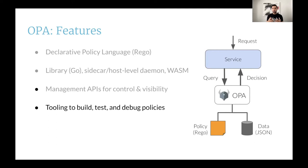Along with the core policy engine, OPA provides you with a rich set of tooling that allows you to build, test, and debug your policies. OPA provides a unit test framework so that you can unit test your policies before you actually deploy them. OPA is integrated with IDEs like Vim, IntelliJ, and VS Code. There's also an online interactive tool called the Rego Playground, which you can use to experiment with and share your Rego policies.